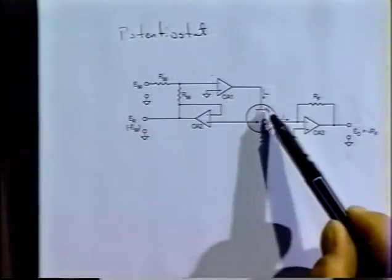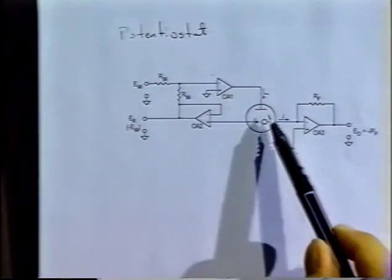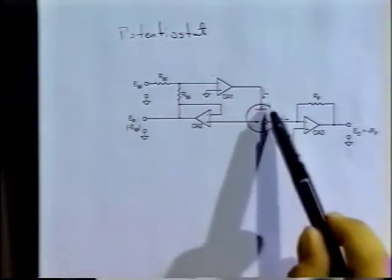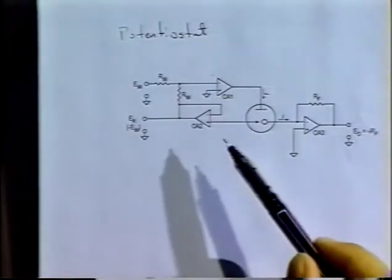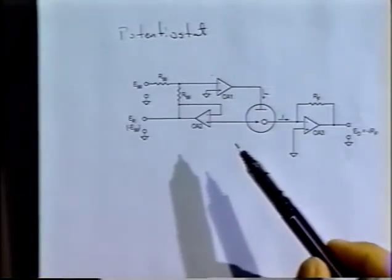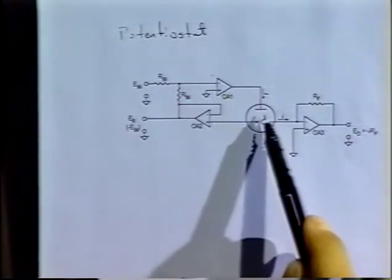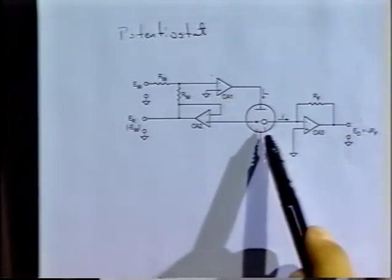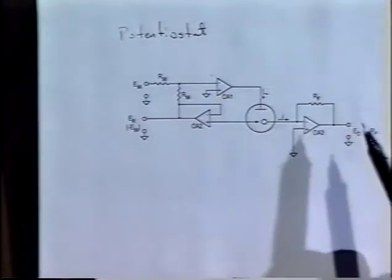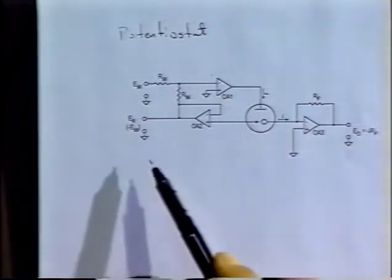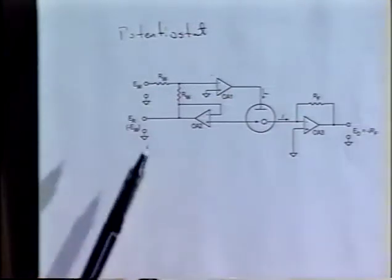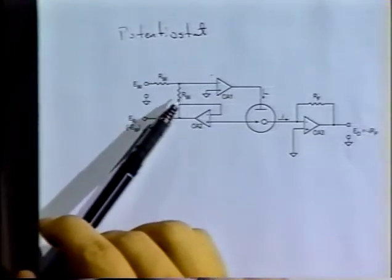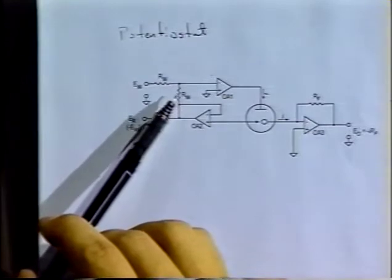Notice the current flows through the auxiliary electrode, and there's a circuit in this way. The feedback loop actually includes the solution resistance as part of the feedback loop. If you do this analysis, you'll see that the voltage at OA1 will be enough to make the current that flows at the output equal to the current at the working electrode — because there's no other place for the current to flow — and that will maintain the potential at the proper point.